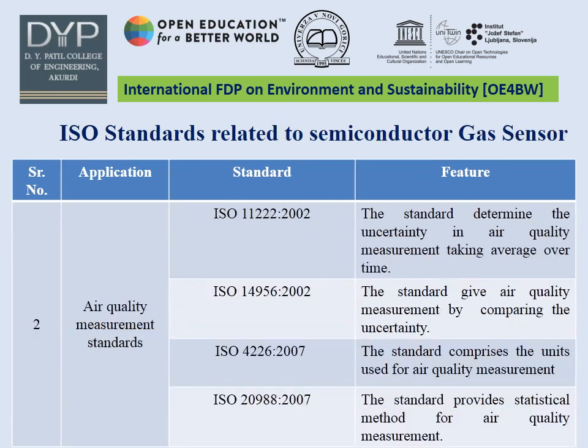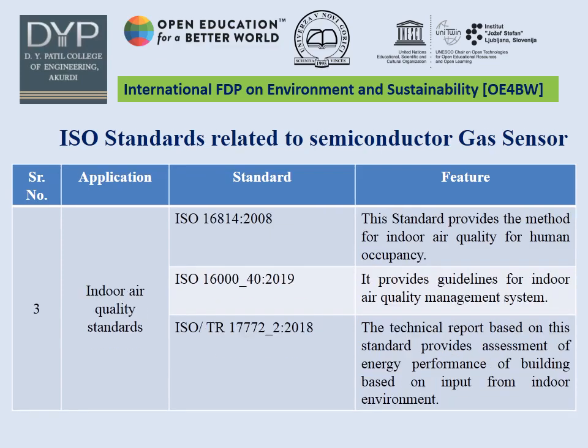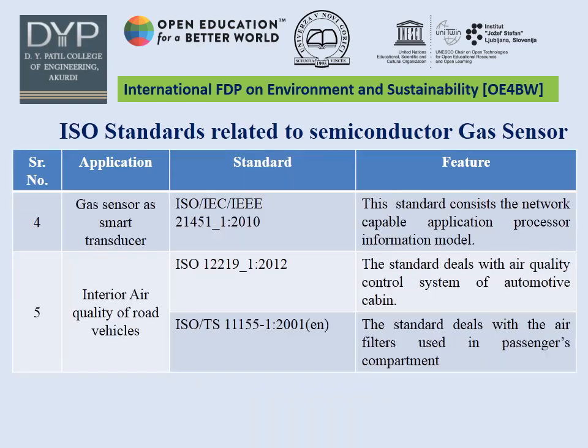Air Quality Measurement Standards are based on the comparison and determination of uncertainty measurement. Indoor air quality standards cover measurement method and air quality management. While using a gas sensor as a smart transducer, it should follow networking and information model standards.